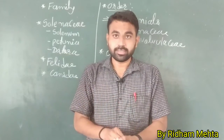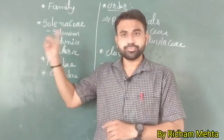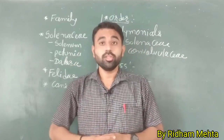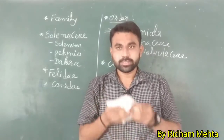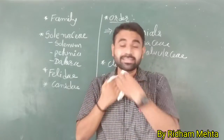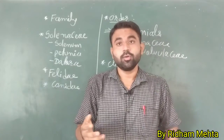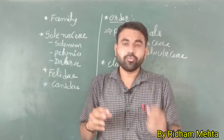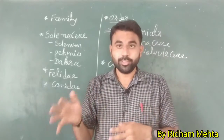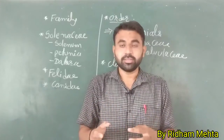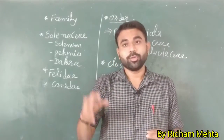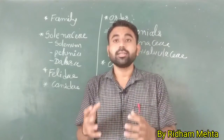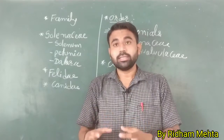Now we talk about the family and order. Order is a group of genera which have similar characteristics. For example, we are discussing Panthera leo — Panthera leo and Panthera tigris — so Panthera is a genus which has different species. Now Panthera is also included in the same group, like the cat family, which is a carnivorous family.